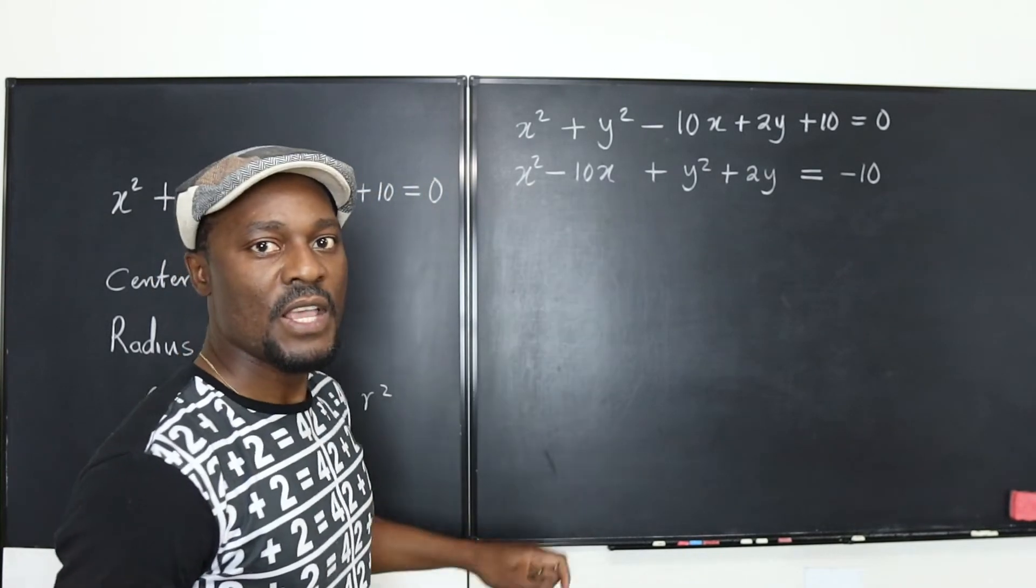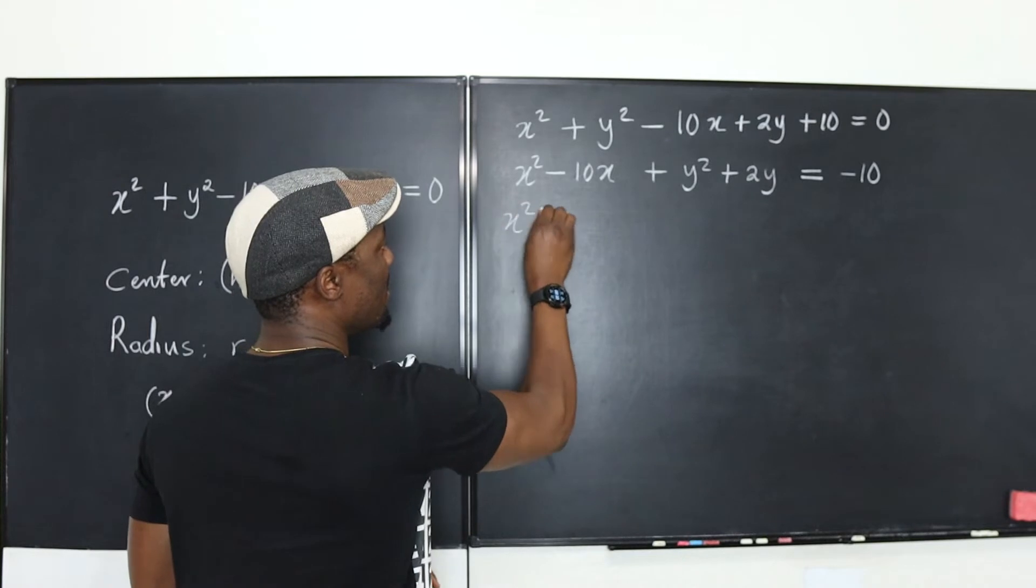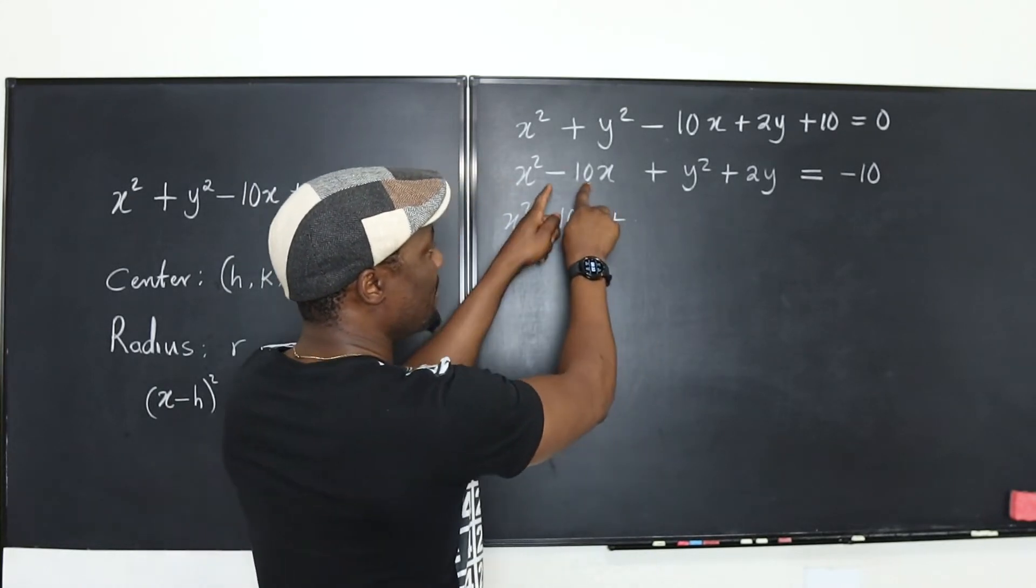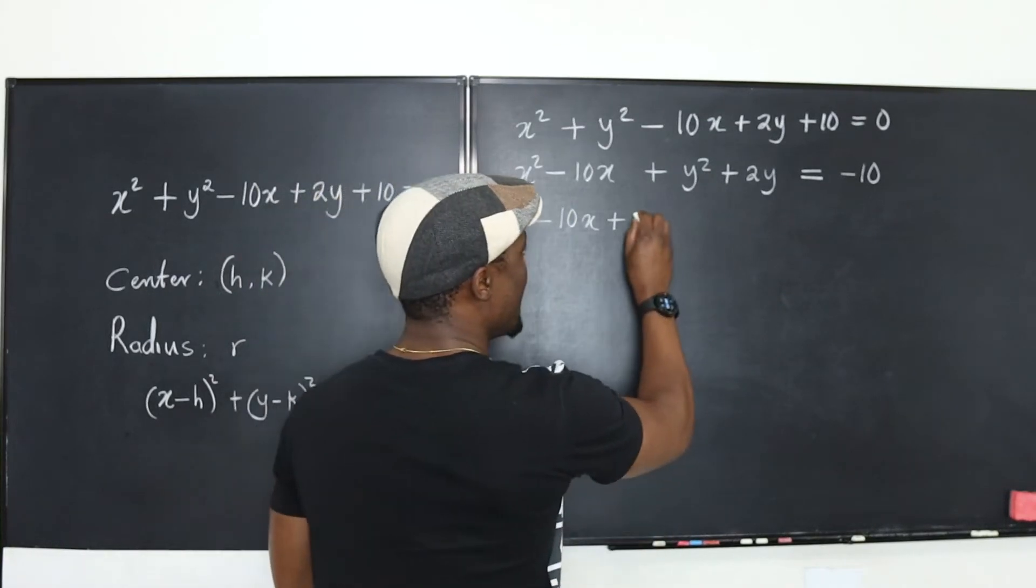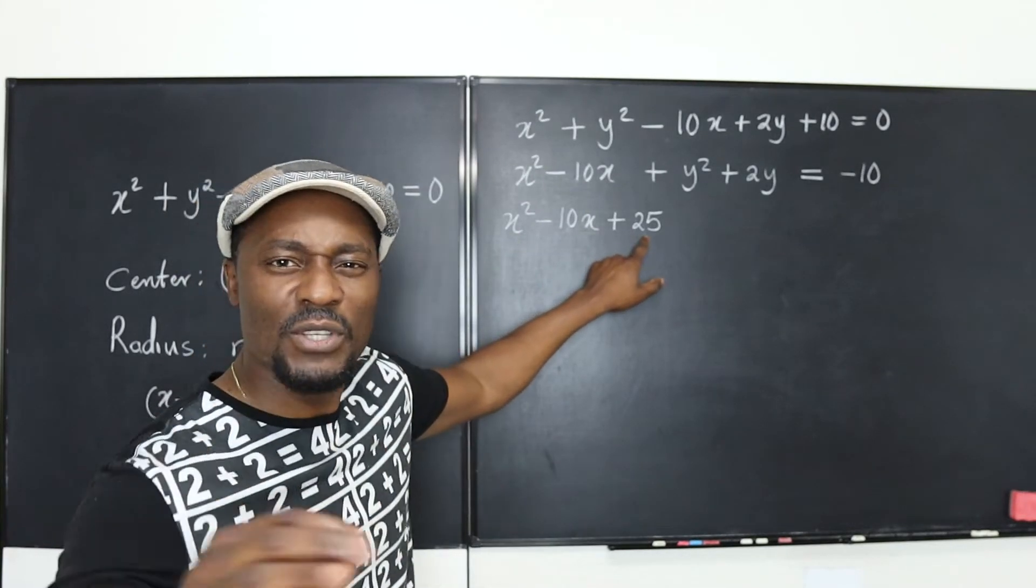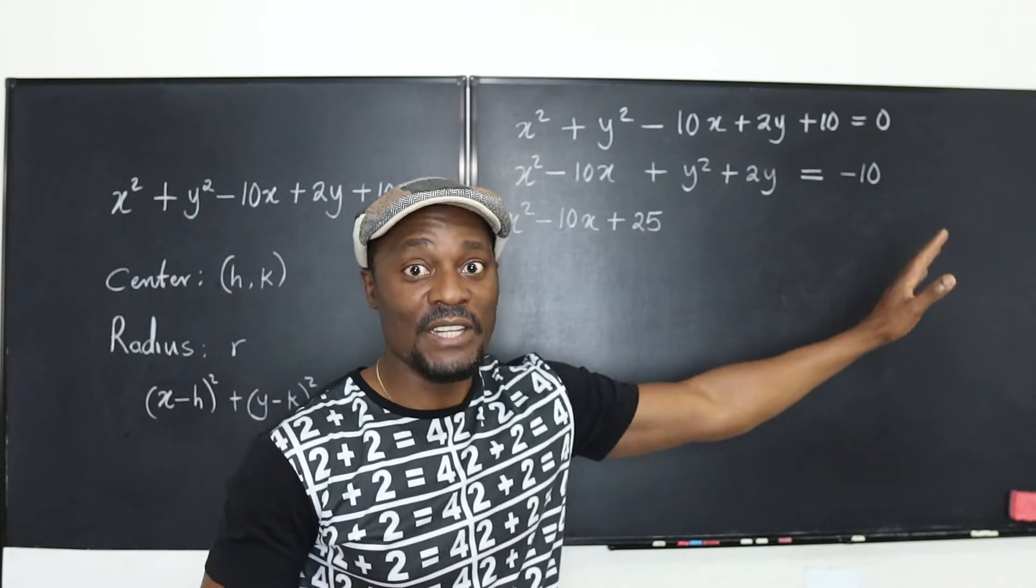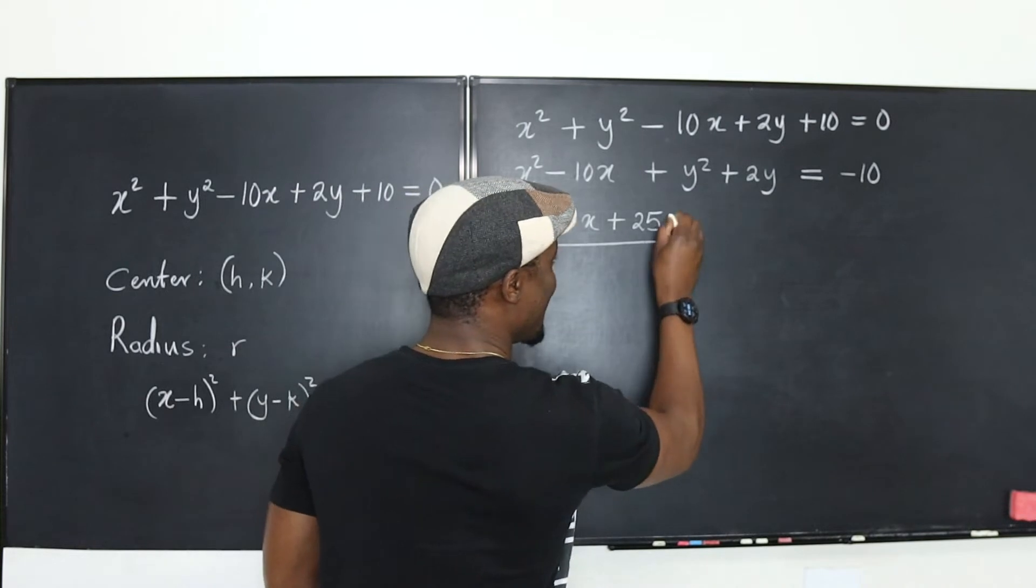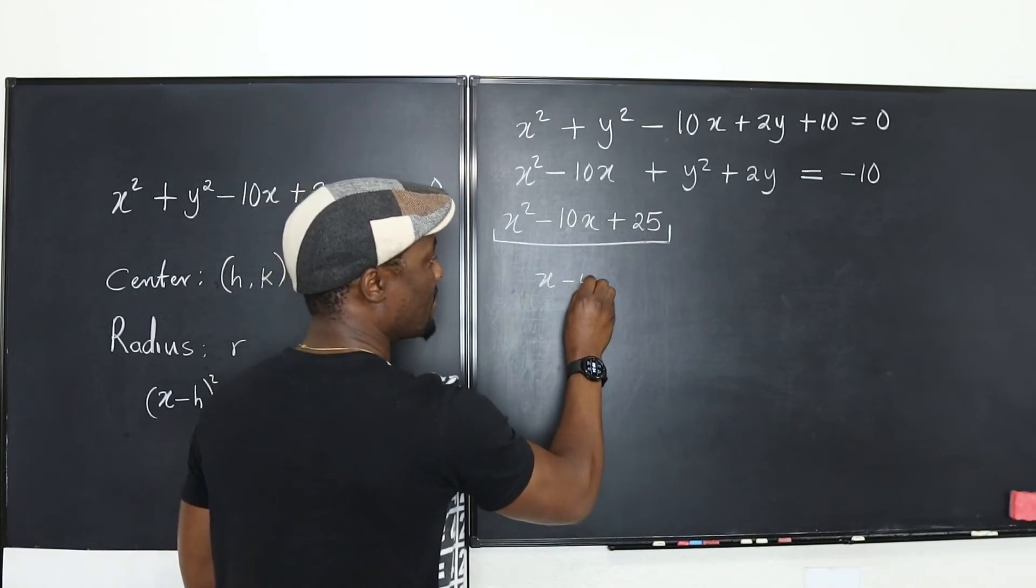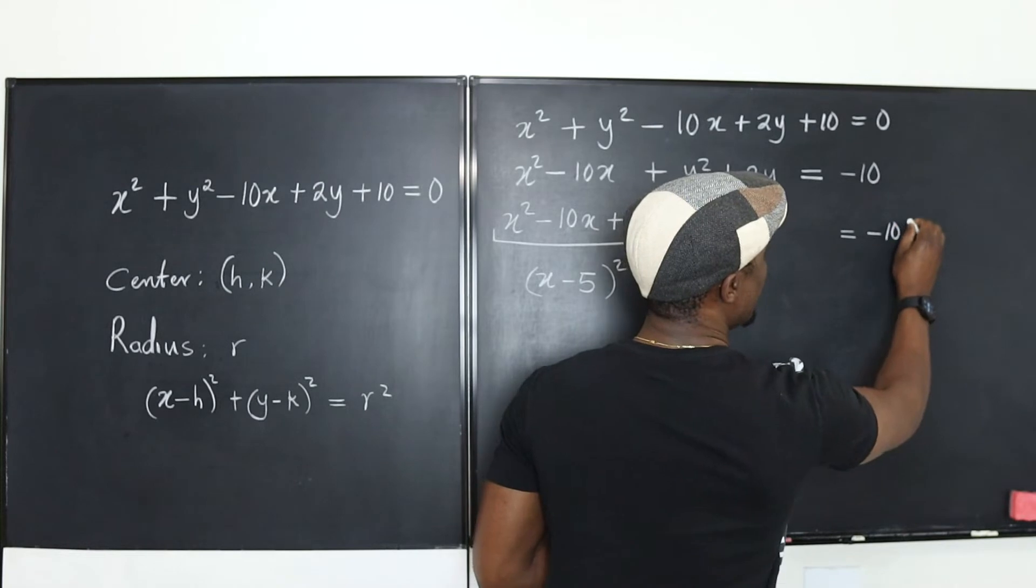Let's complete this square. We take half of this and square it. This is x² - 10x. Then I'm going to add: if I take half of -10, it's -5, and the square of that is 25. I've added 25, so to make this equation the same, I have to add 25 to the other side too. Here, when factored, this becomes (x - 5)². On the other side, I write -10 + 25.